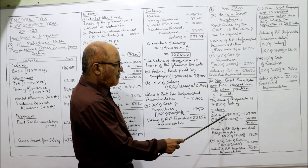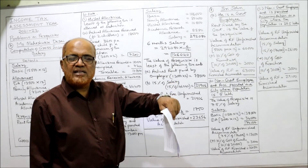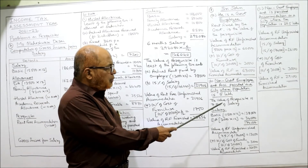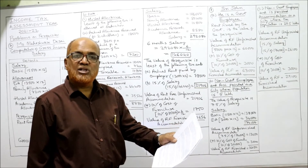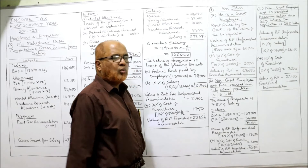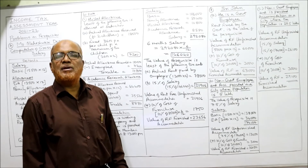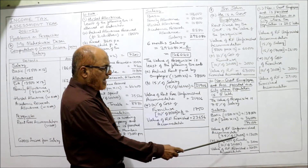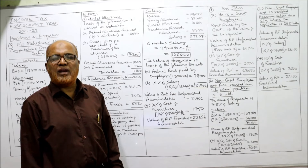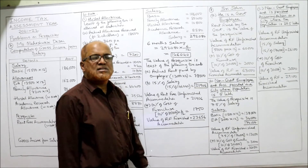Total salary = 1,38,000 + 36,000 = 1,74,000. Value of rent-free unfurnished accommodation = 7.5% of 1,74,000 = 13,050. To this add 10% of cost of furniture: 10% of 30,000 = 3,000. Total = 13,050 + 3,000 = 16,050. This is the value of rent-free furnished accommodation for Case B.